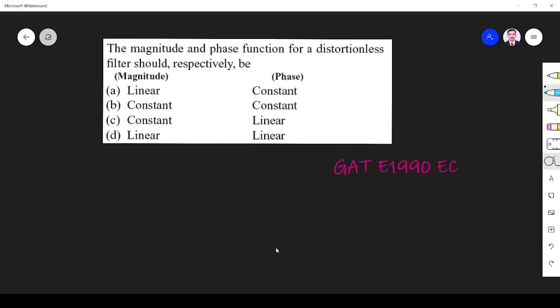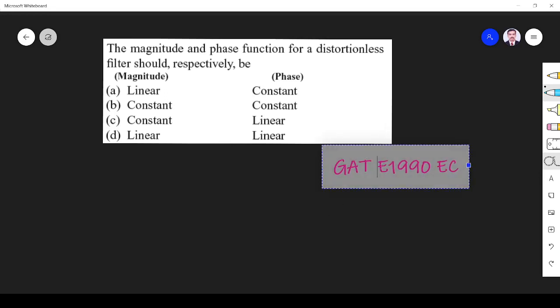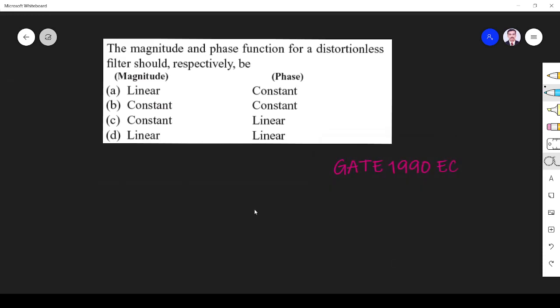My friends, in this video let us solve a signal system related question from GATE 1990 EC paper. The question is asking: what should the magnitude and phase function for a distortionless filter be respectively?